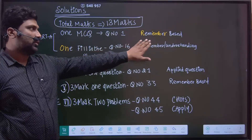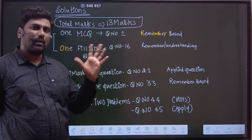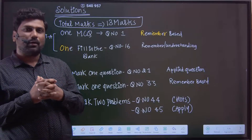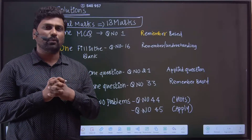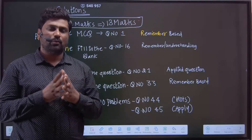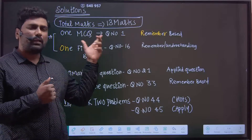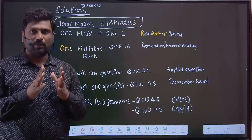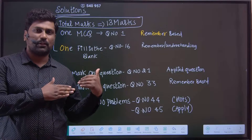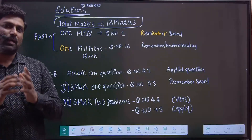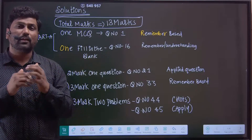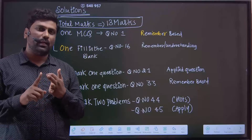Question number one in Part A is a remember-based question. For example: 'Aquatic species are more comfortable in cold water rather than warm water — why?' They will give you options and you have to choose the correct option. Most of the time they will ask on solubility, or on the first part of the chapter — expressions like molarity, molality, and mole fraction.